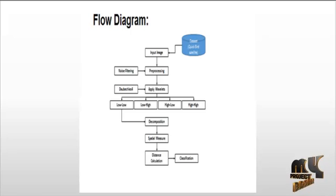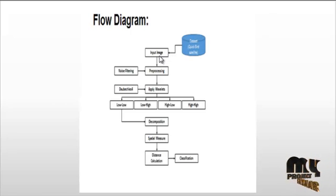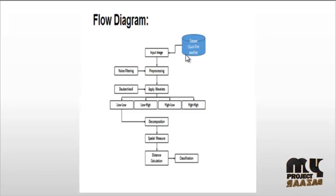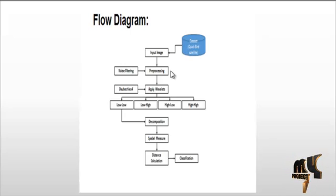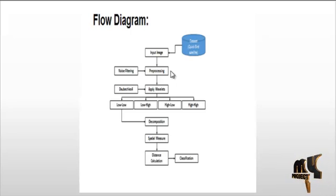Now we are going to discuss the flow diagram for the process. First, the input image or input data is taken from the dataset. After taking the dataset image or data, preprocessing is carried out. Preprocessing involves codebook generation or noise filtering: if the input is in data format, codebook generation is carried out; if an image is taken from the dataset, noise filtering is carried out.